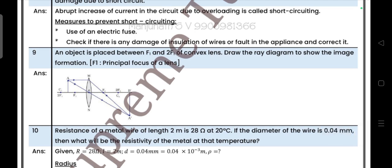Next question: An object is placed between F1 and 2F1 of a convex lens. Draw the ray diagram to show the image formation. This is the answer. Next question, question number 10.